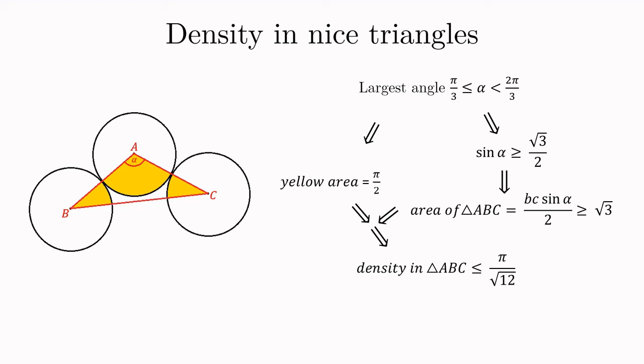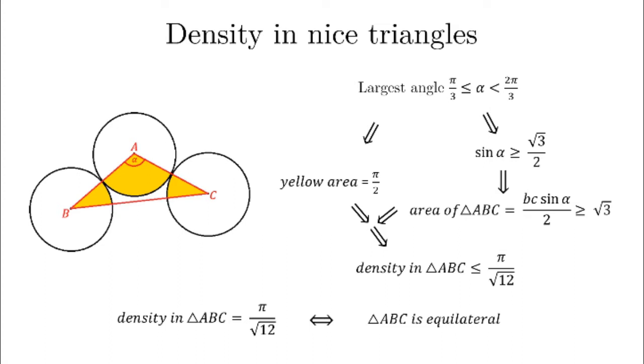Now whenever you have an inequality like this it's worth considering the equality case. As always this equality case occurs exactly if all the inequalities we've seen before are in fact equalities. So the sine of alpha has to be exactly equal to the square root of 3 over 2 which given the constraints on alpha means that alpha has to be pi thirds or 60 degrees and the side lengths b and c have to be exactly 2. In summary equality occurs if and only if the triangle ABC is equilateral with side length 2. If you recall equilateral triangles with side length 2 are exactly the fundamental building blocks of the hexagonal packing. At this point we have successfully solved the local version of our question. We have shown that if we're only considering three circles then the optimal arrangement is the one where the centers form an equilateral triangle of side length 2.